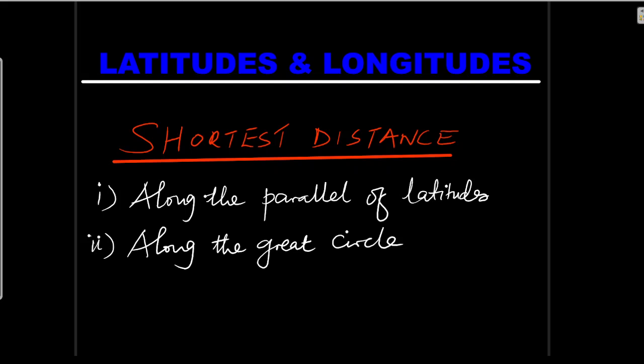Latitudes and longitudes — the shortest distance. We're going to look at the shortest distance along the parallel of latitudes, that is along the small circle. We can call this the parallel of latitudes or the small circle, and also along the great circle. So how do we calculate the shortest distance along the parallel of latitudes and along the great circle?